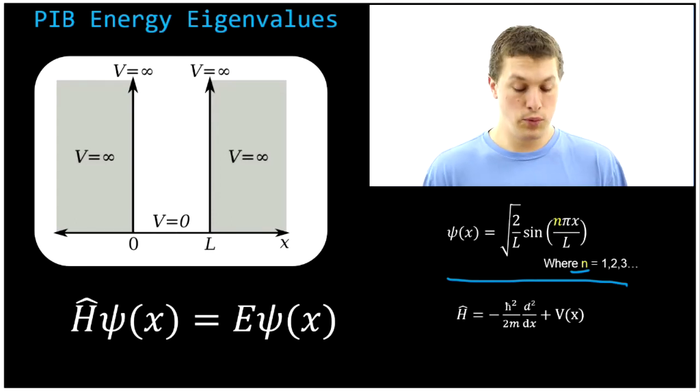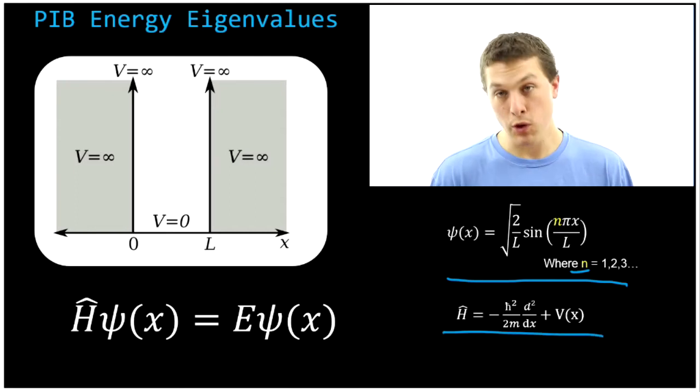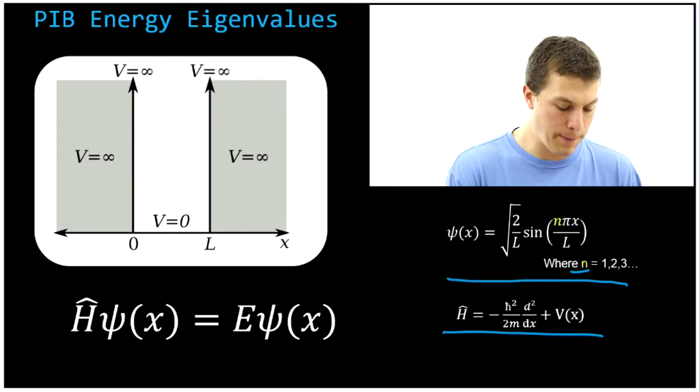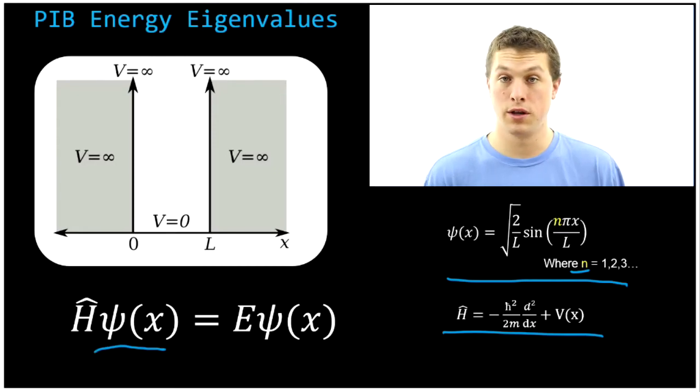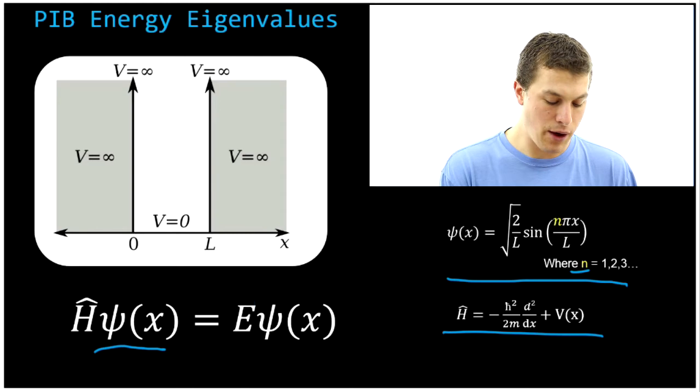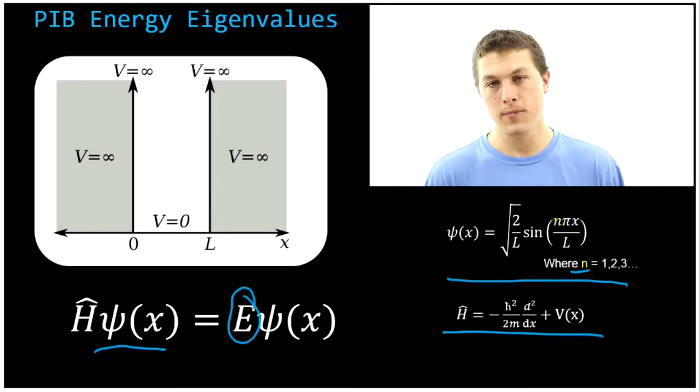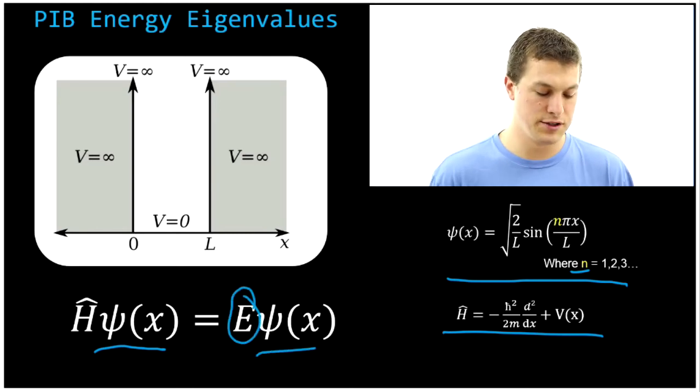How do we do that? We take the Hamiltonian, which is our operator that tells us the total energy of our system, and we apply it to the wavefunction with our Schrodinger equation that you see down here at the bottom. That's going to spit out the energy of our wavefunctions times the wavefunctions themselves.